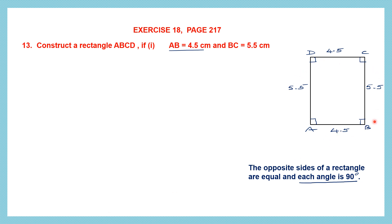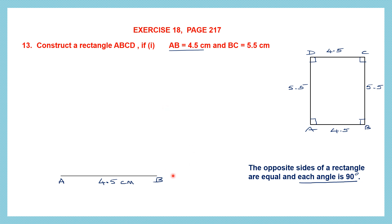Now we have our rough figure. Based on this let's construct the actual figure. First thing is we're going to construct the base AB equal to 4.5 centimeters. So with the help of your ruler draw a line AB which is 4.5 centimeters. Now we've been given BC 5.5 centimeters. Now how do we construct this? We can't simply construct 5.5 here — we need to have an intersecting point to get the exact measurement. So we're going to construct an angle of 90 degrees at the point B.